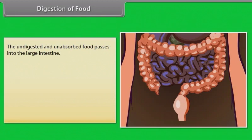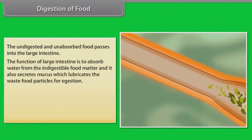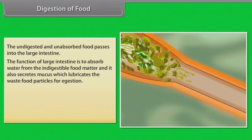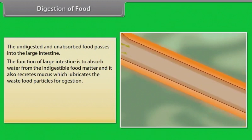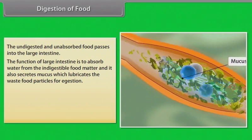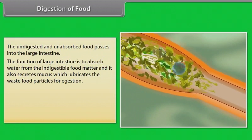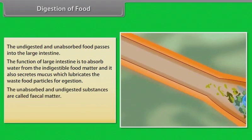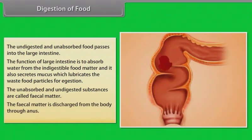The undigested and unabsorbed food passes into the large intestine. The function of the large intestine is to absorb water from indigestible food matter; it also secretes mucus to lubricate waste food particles. The unabsorbed and undigested substances are called faecal matter, which is discharged from the body through the anus.